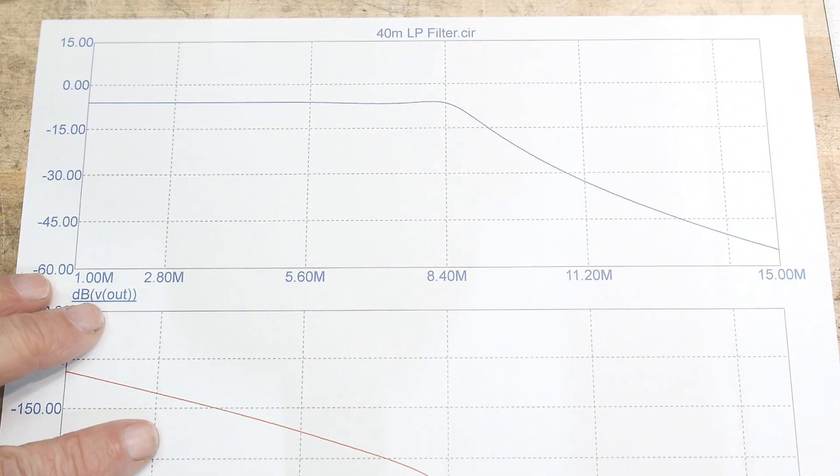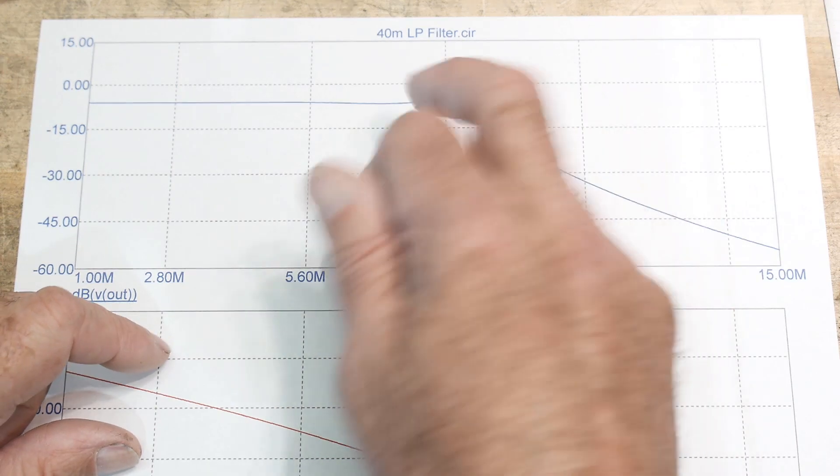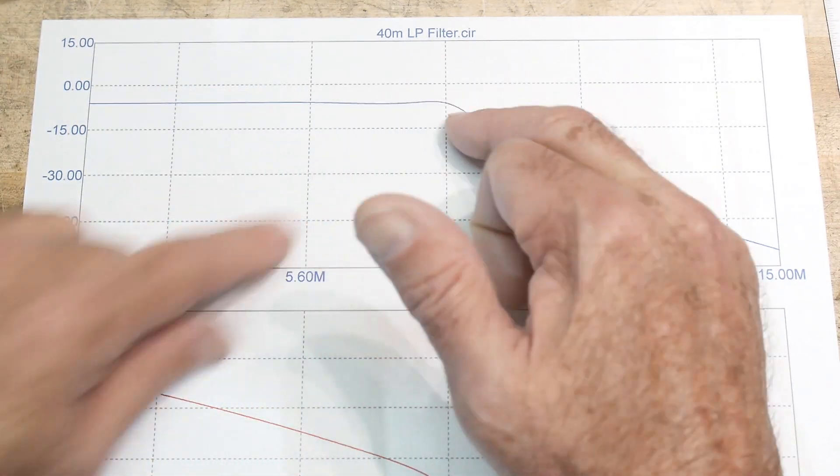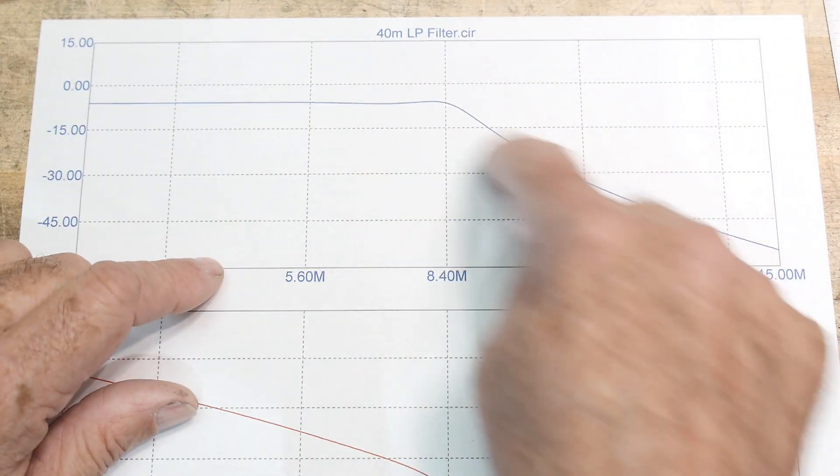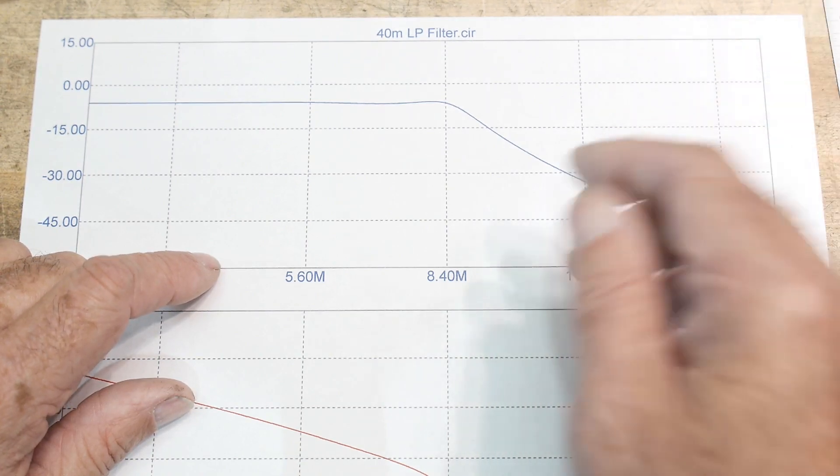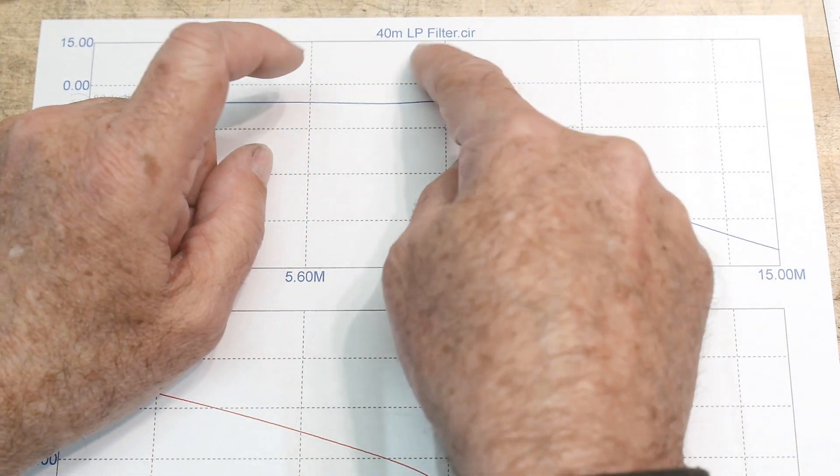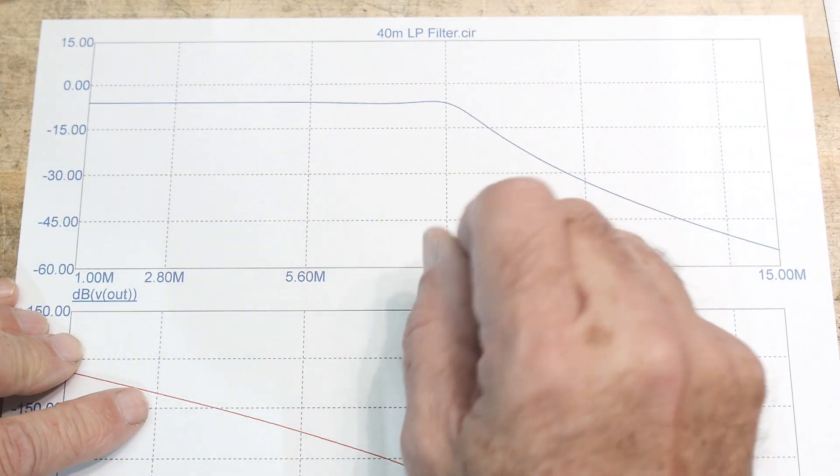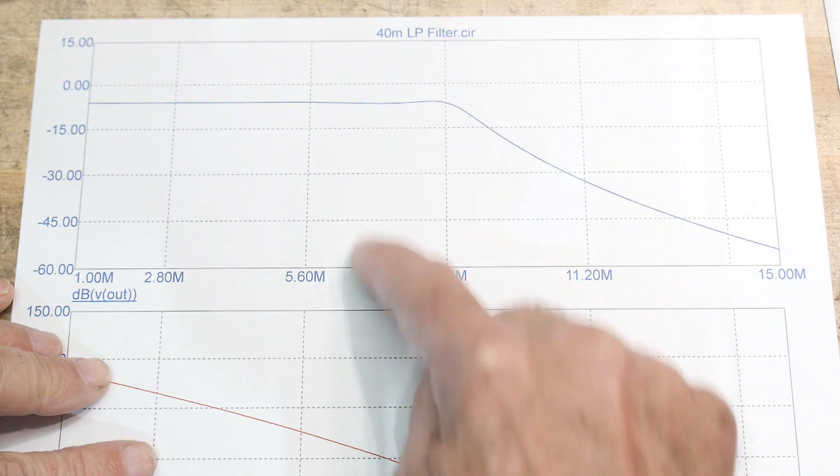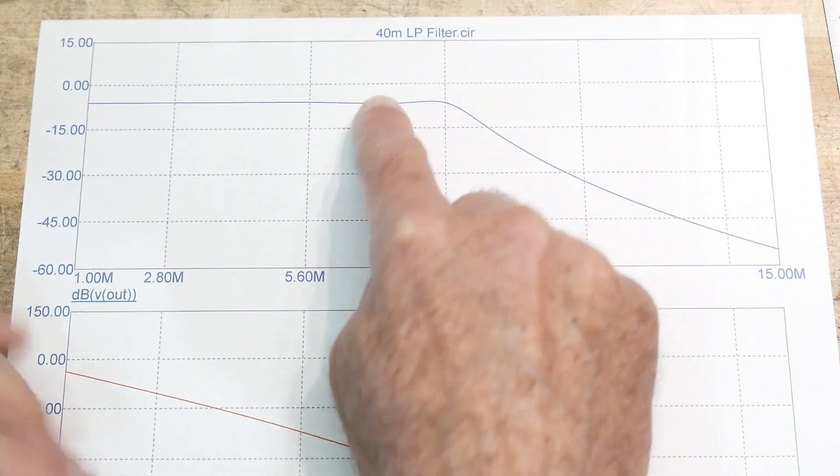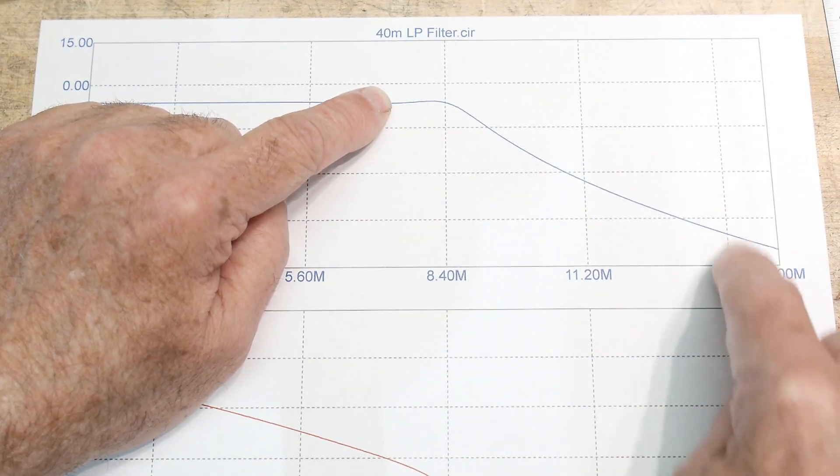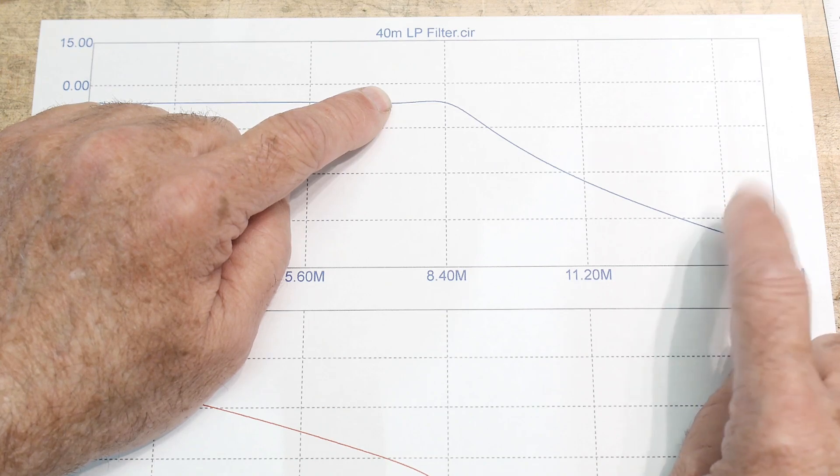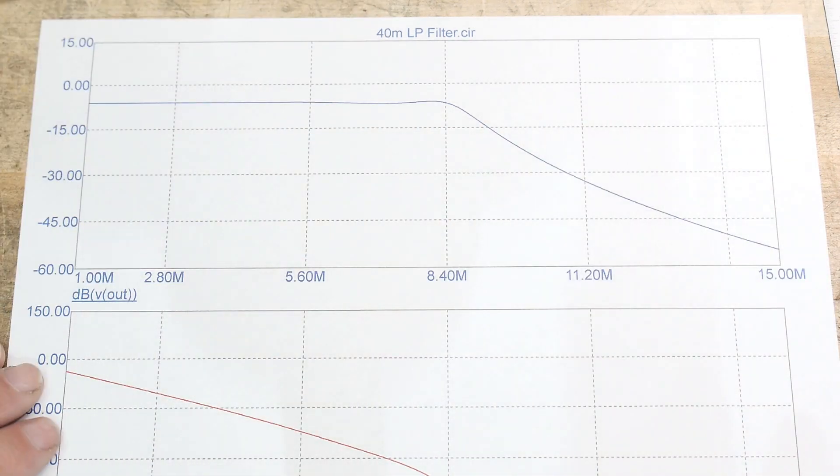A Butterworth filter is maximally flat in the passband with no ringing. A Chebyshev will roll off faster but will have some ringing in it. Right around seven megahertz it'll roll off, and when it hits 14 megahertz it's nice and way down. I think these values will work just fine.